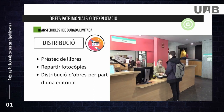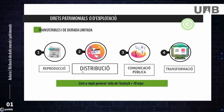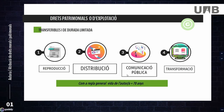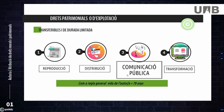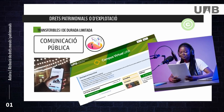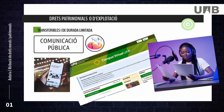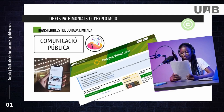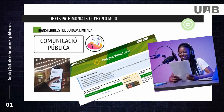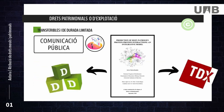An example of both rights is when the author of a book transfers reproduction and distribution rights to a publisher to make copies and distribute them to bookstores. The right of public communication involves access to the work simultaneously or not by a multitude of people, without prior distribution of copies. For example, when you upload a photo to the internet.